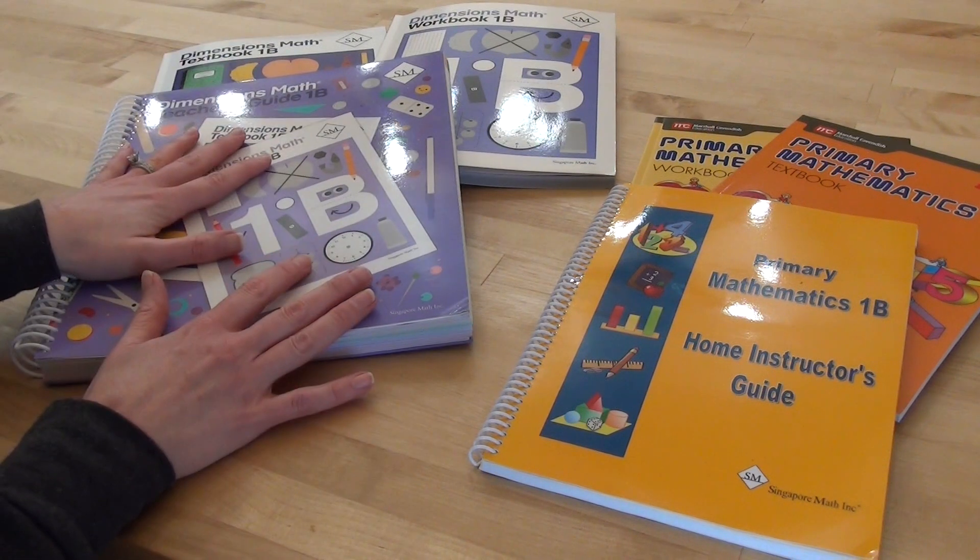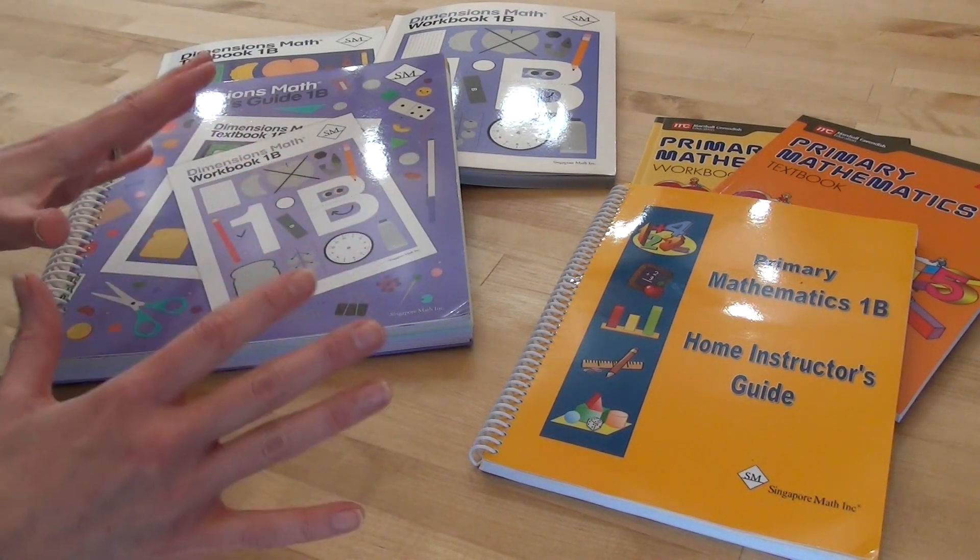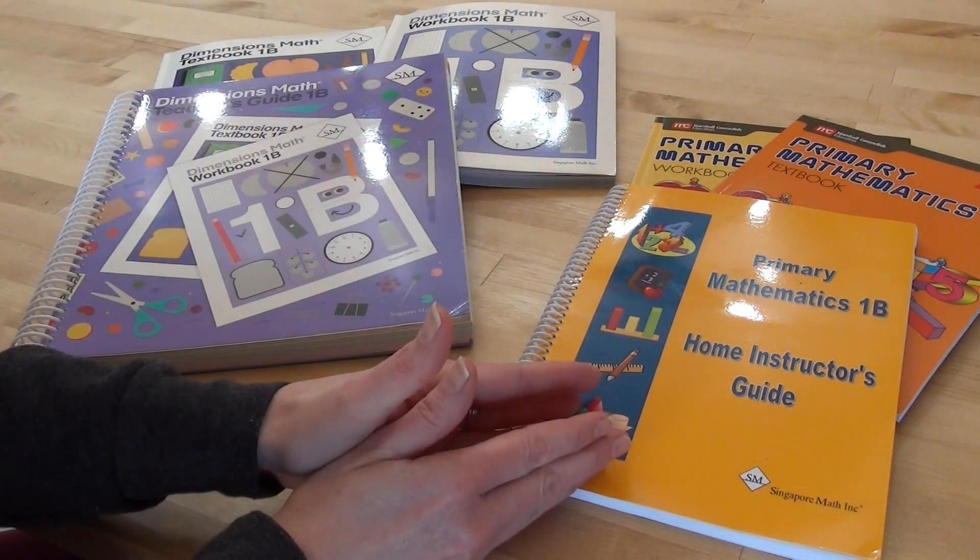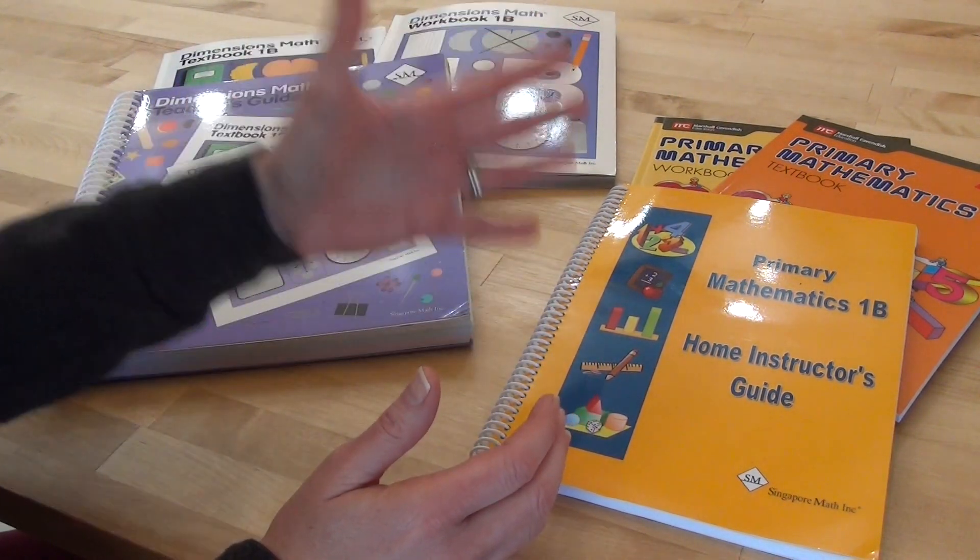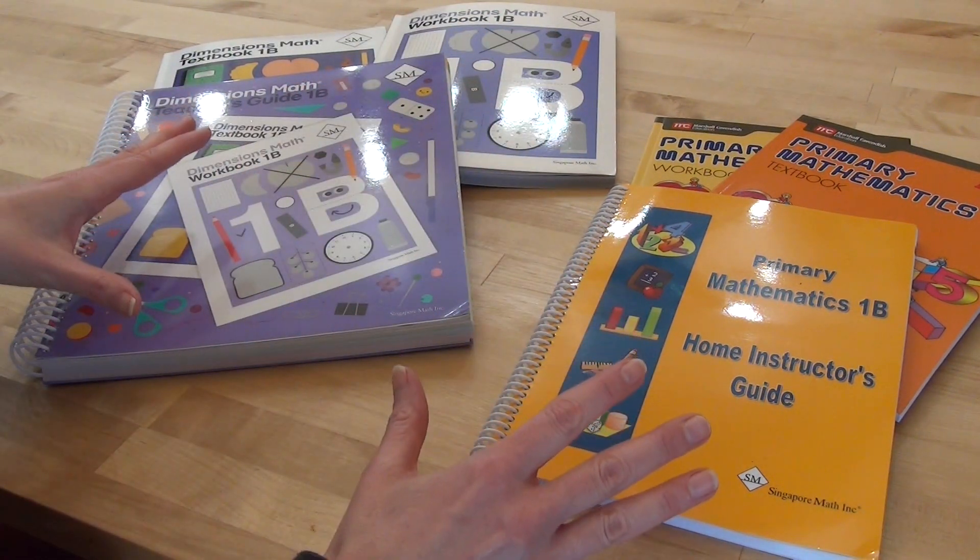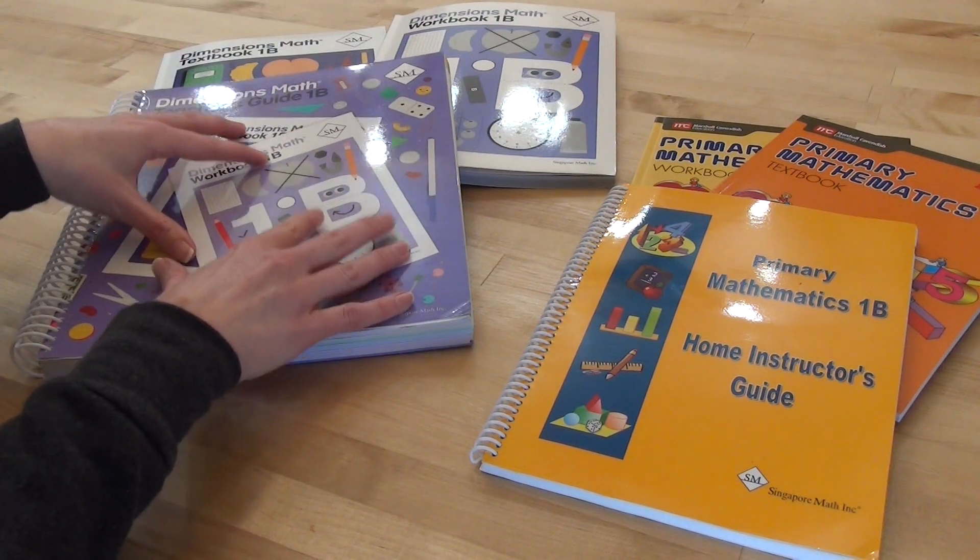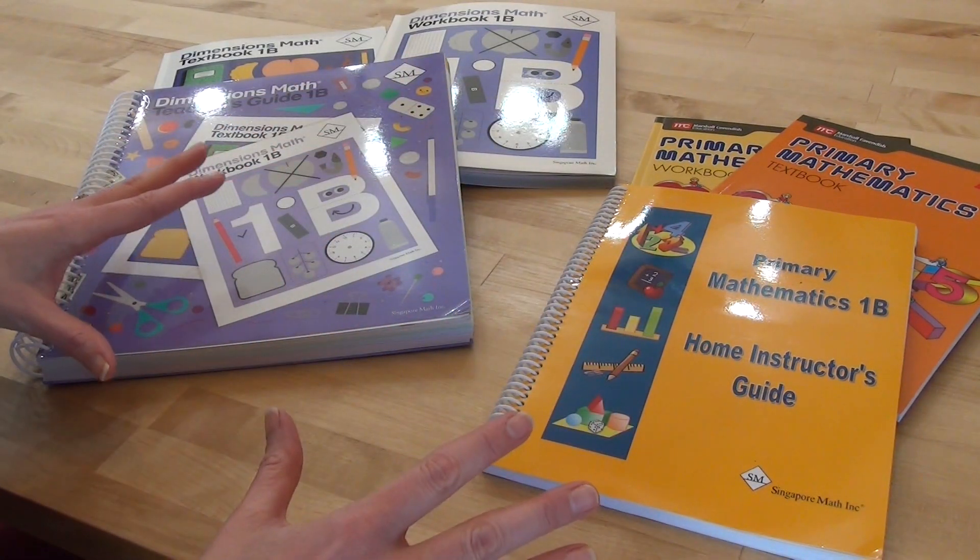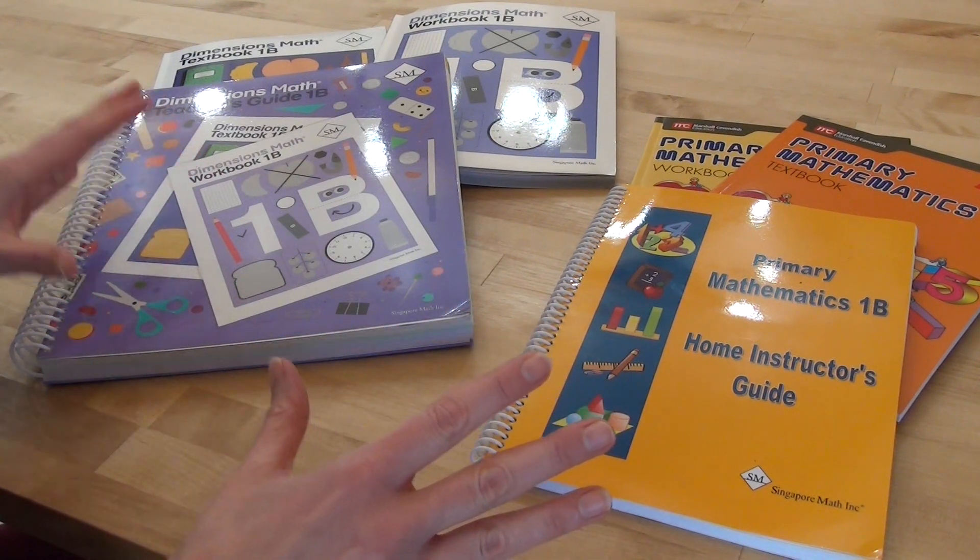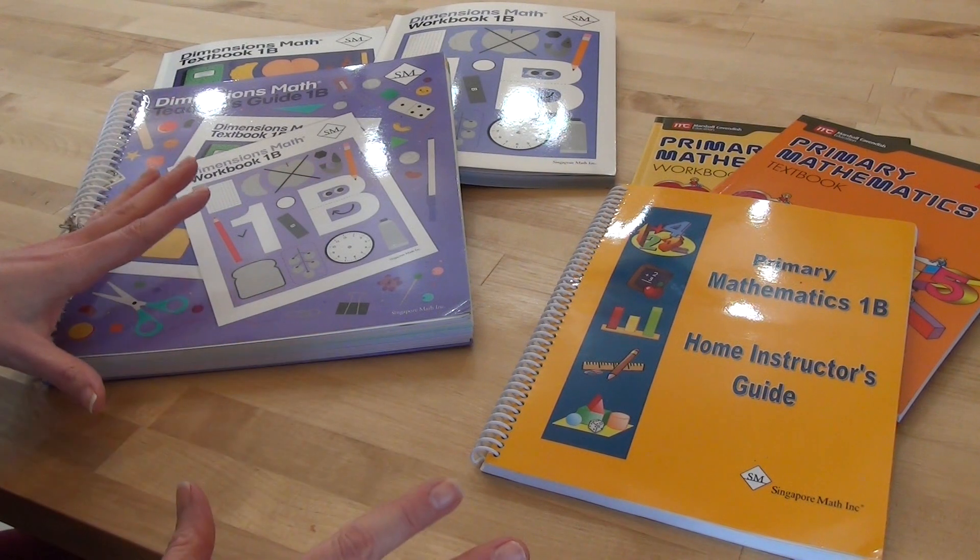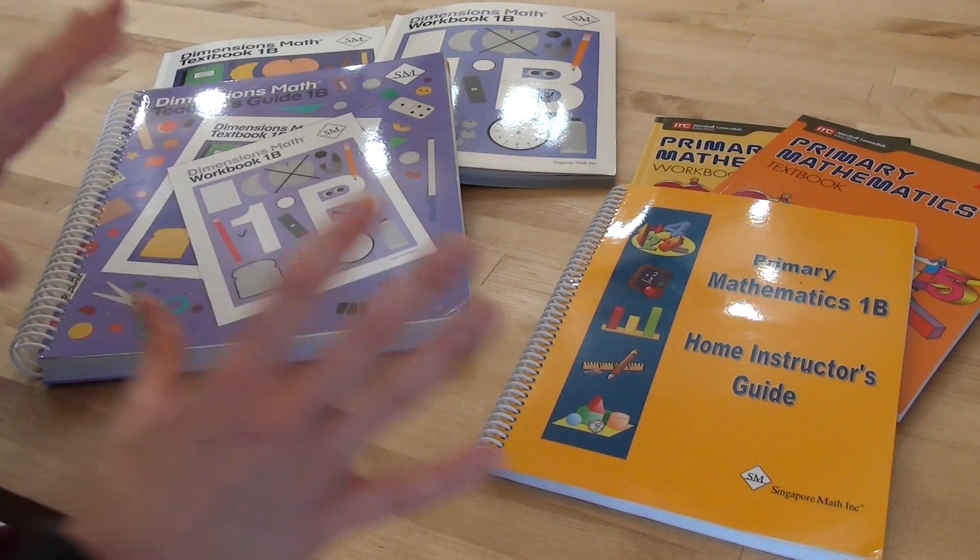I already had 1B. I was so interested to see what this was about that I decided to go ahead and buy 1B for Primary Mathematics. So I want to do a comparison of Dimensions 1B and Primary 1B but I want to know what do you guys want to know about it. What are your questions? I am going to do that video and I'm going to try to answer all of your questions that you might have on this.